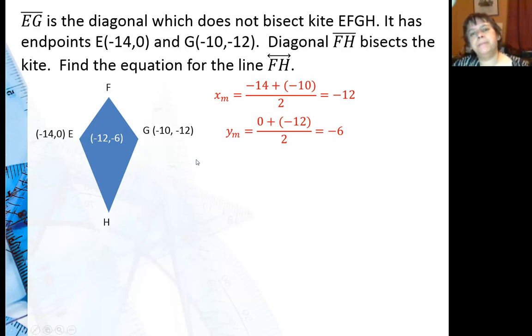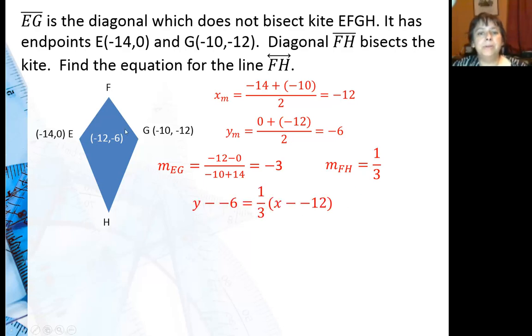Now I need to find this slope here. Well, the slope of EG is going to be negative 12 minus 0 over negative 10 plus 14 because it's minus negative 14. And I get negative 3 because negative 12 divided by 4 is negative 3. The perpendicular slope of FH is going to be the negative reciprocal. So I put a 1 underneath the negative 3, flip it, and change sign. Now I use my point slope formula using my perpendicular slope going through that midpoint, negative 12, negative 6. Combine like terms, do the distributive property here. 1 third times x times 1 third times positive 12 is positive 4. Subtract 6 from both sides and my equation for the diagonal is Y equals 1 third X minus 2.